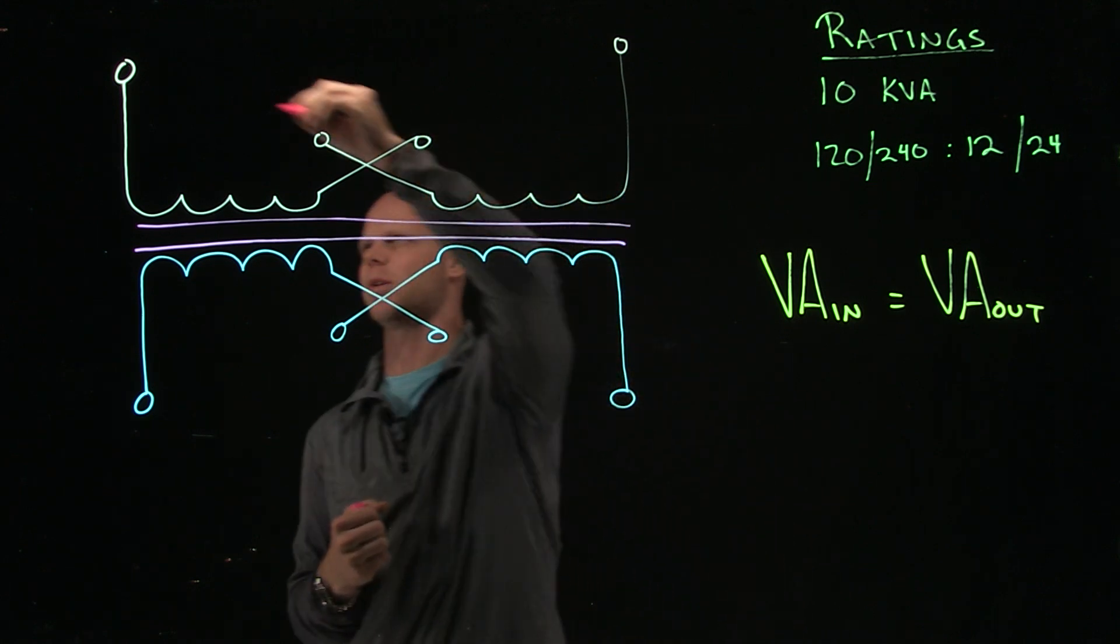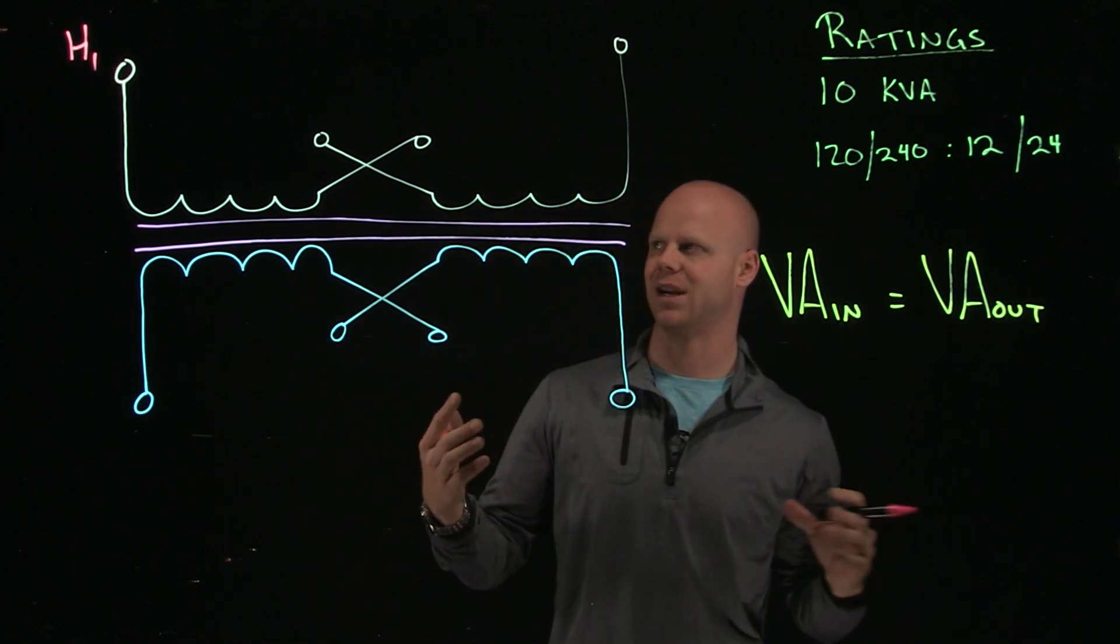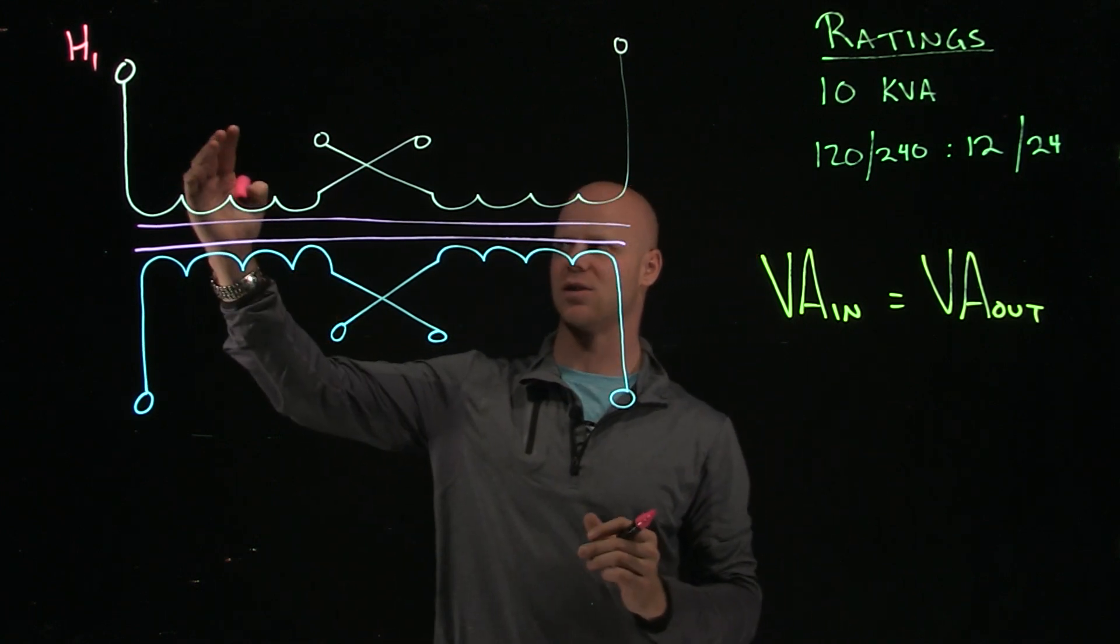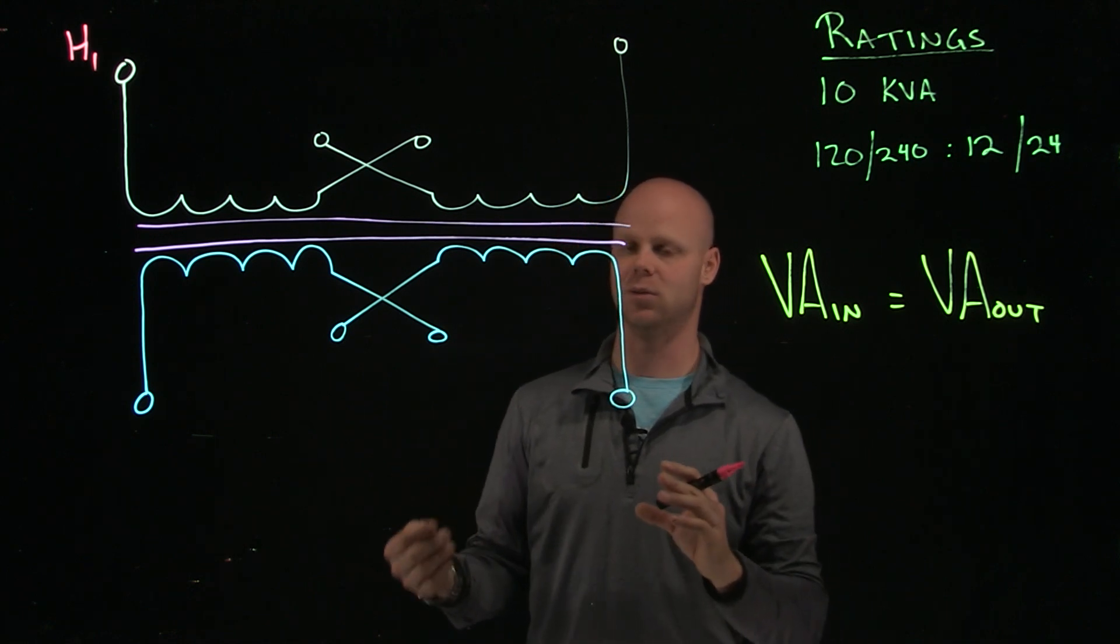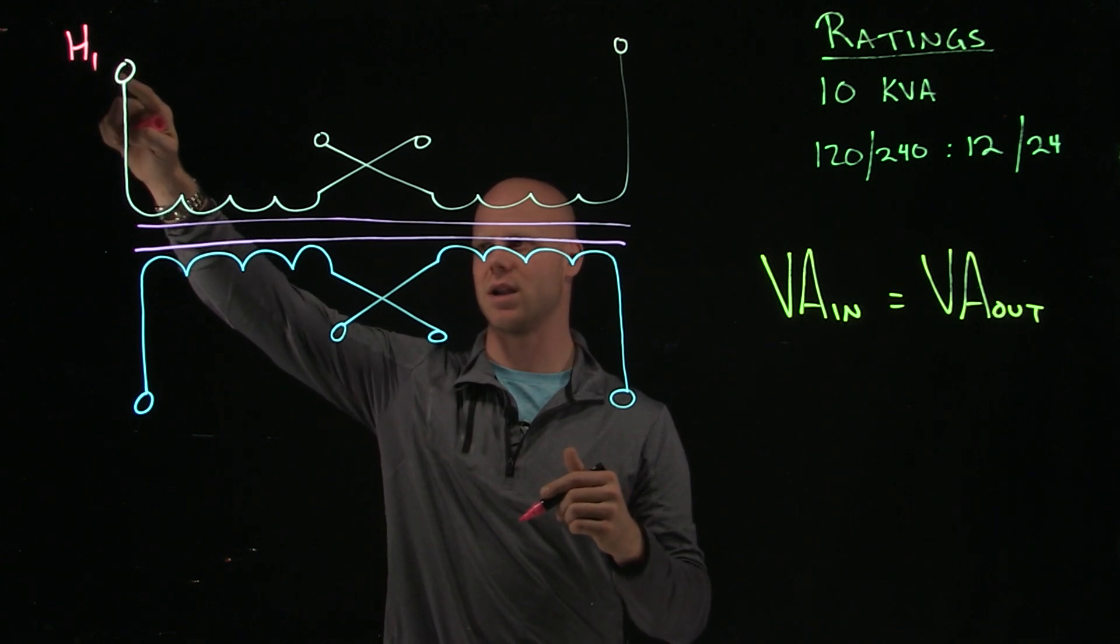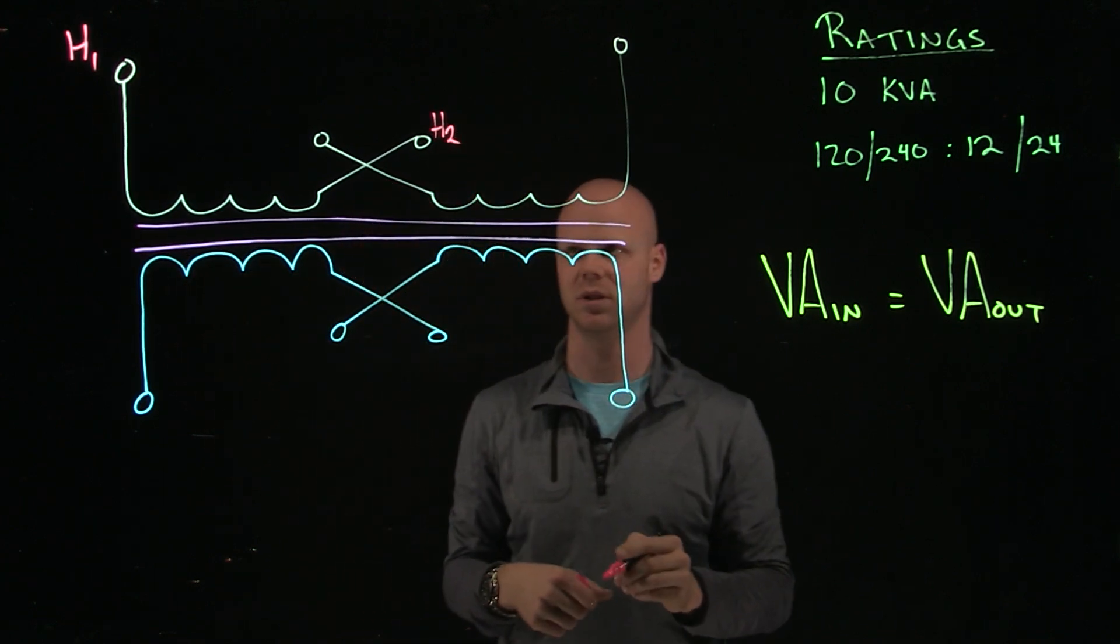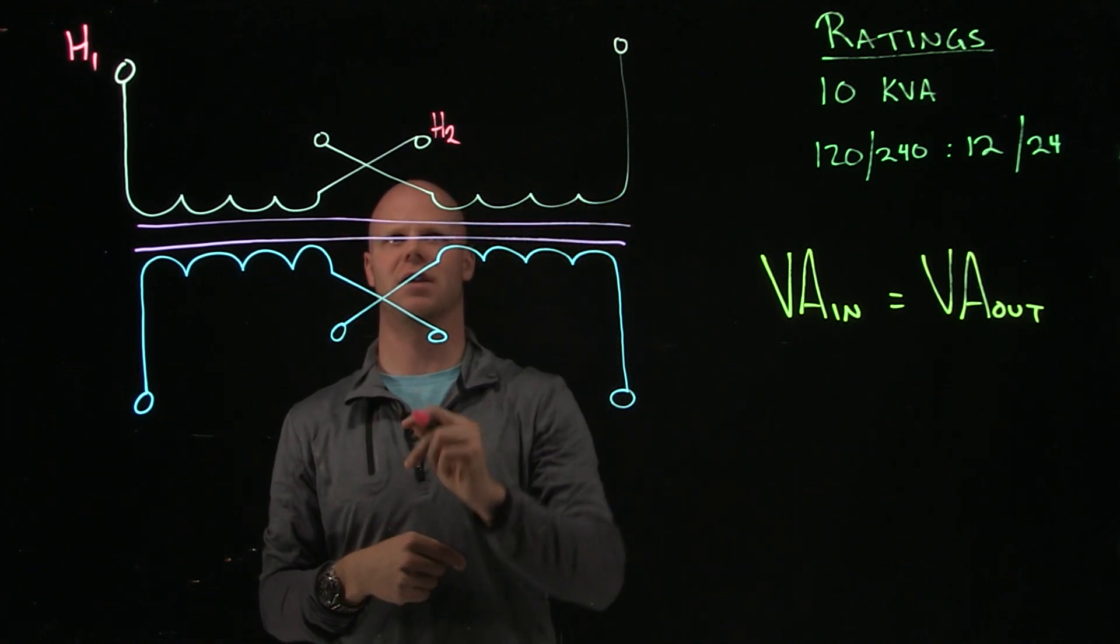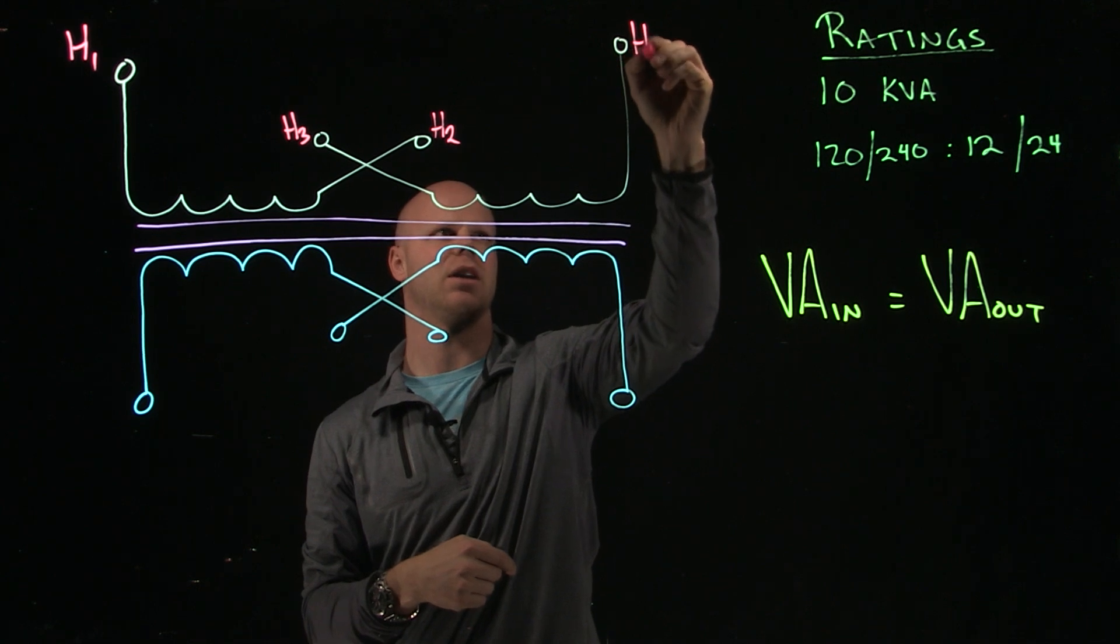So just for this example, I'm going to label this as my H1. Kind of an anti-standard is that the H1 will always be the upper left. That way, if your terminals were missing, you would know that's definitively the H1. I could use an ohmmeter. But also if this is my H1, the other side of that winding has to be H2. So then if that's the other side of this winding, this will be H3. Here is my H4.